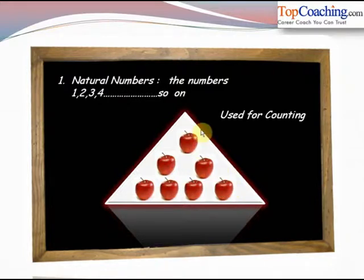So there are in all 7 apples in this triangle. So in our day to day life we use natural numbers for counting. Maybe it's counting the number of bananas, it may be counting of pens, it may be counting the number of rooms in your house.